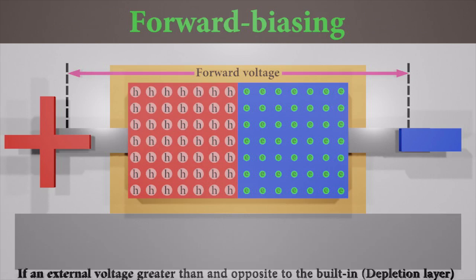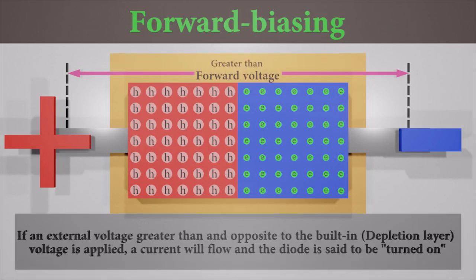If an external voltage that is greater than and opposite to the built-in voltage is applied, a current will flow and the diode is said to be turned on.